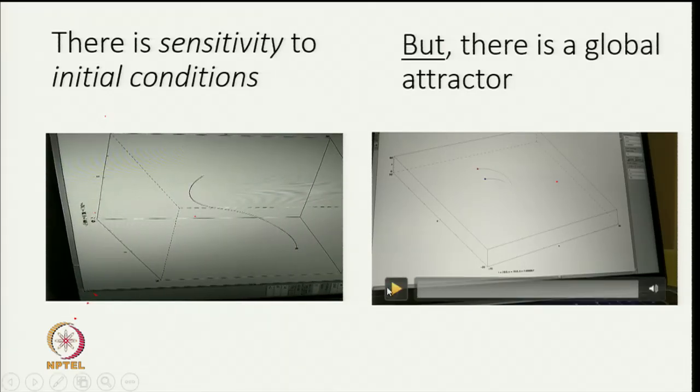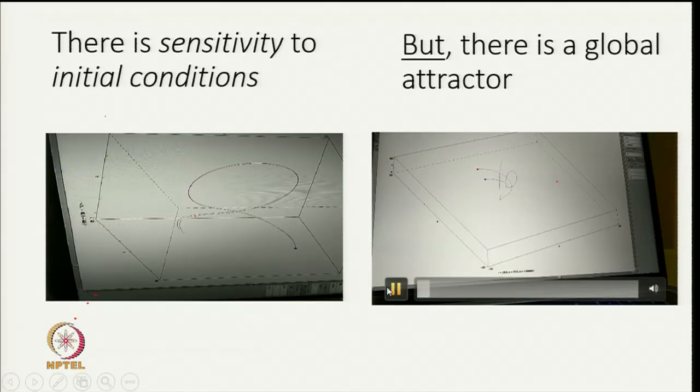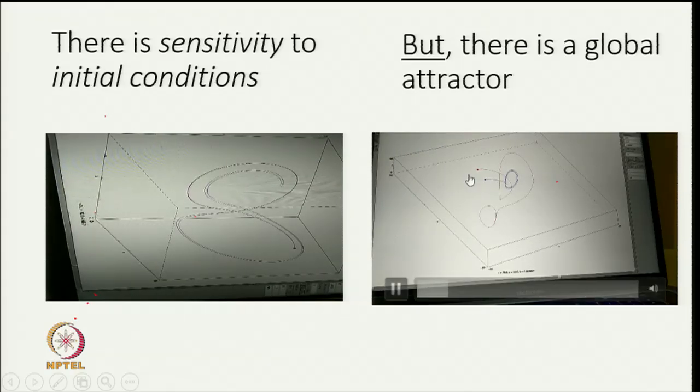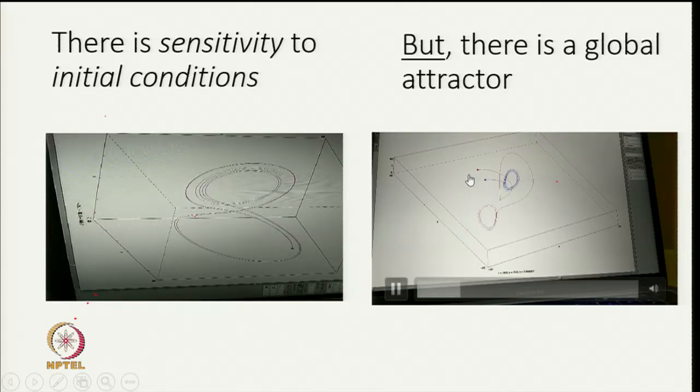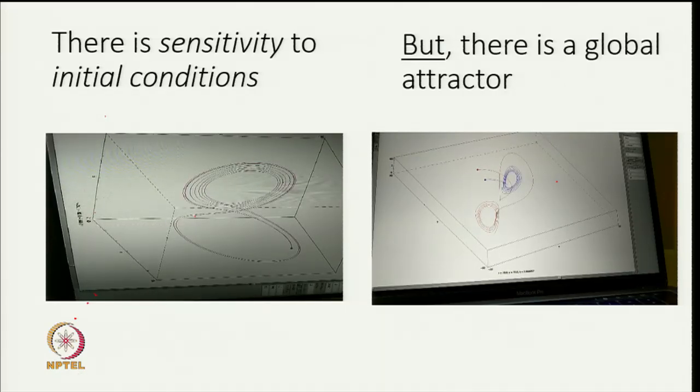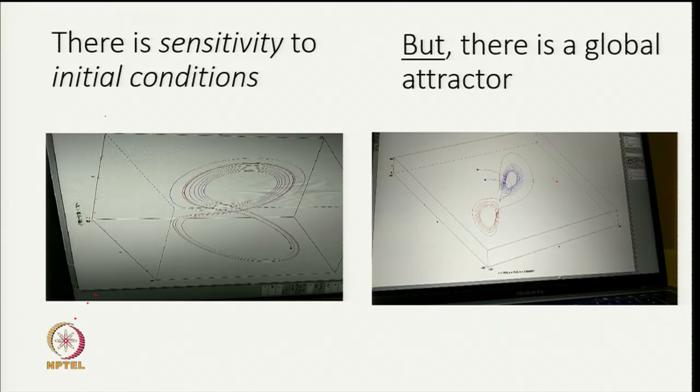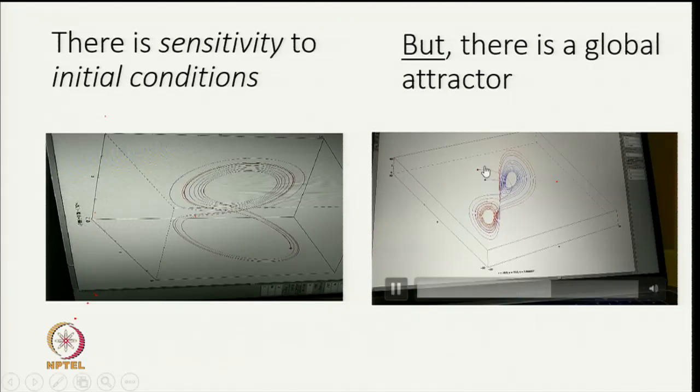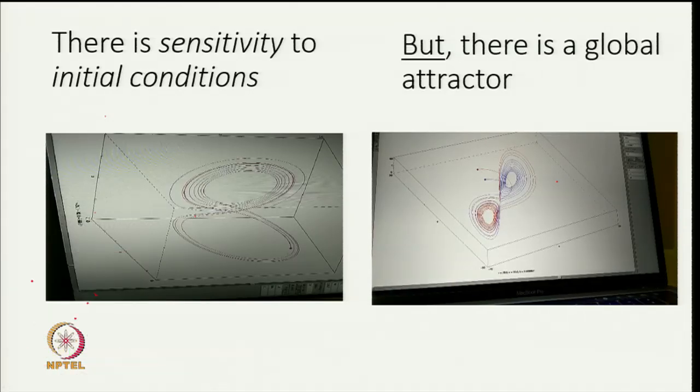The reason they do not ever move very far from each other is that there is a global attractor, which can be seen where I have started with two very different initial conditions. Nevertheless, as time goes on the orbits eventually fill up the same region of space. Regardless of where you start in phase space, your solutions eventually land on this part of the phase space and the orbit moves on this object which is the attractor.